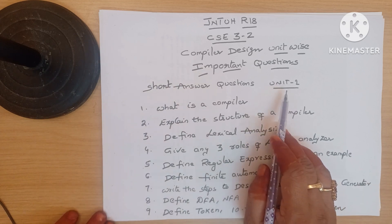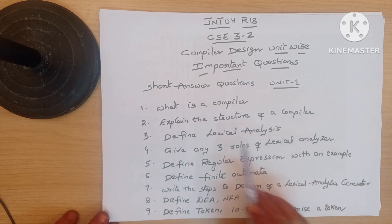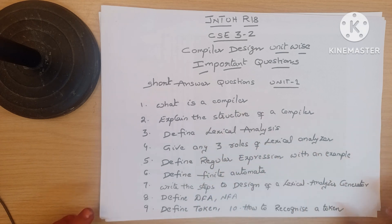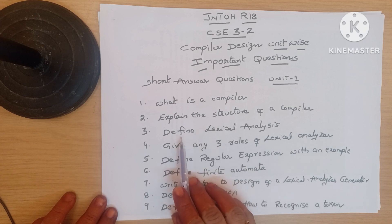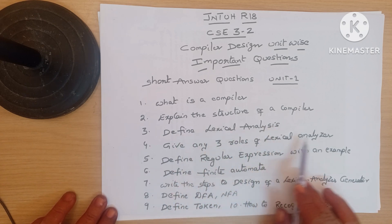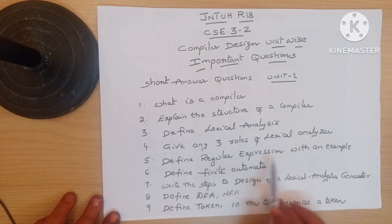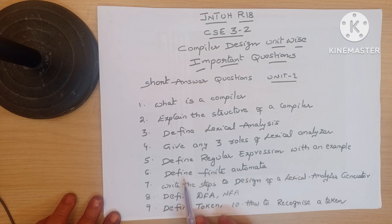This is the Unit 1 short answer questions. First question: what is a compiler — just the definition. Second: explain the structure of a compiler. Third: define lexical analysis and give any three roles of a lexical analyzer — an important question. Next: define regular expression with an example, and define finite automata.